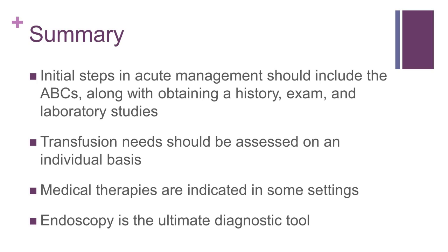In summary, the initial approach to a patient with an acute GI bleed includes managing the ABCs and obtaining pertinent history, exam, and laboratory studies to discern the etiology and evaluate the extent of the bleed. The decision to transfuse blood should be based on the individual patient's scenario. Medications such as IV proton pump inhibitors and IV octreotide are indicated in certain situations. Finally, endoscopy is the ultimate diagnostic tool in this setting and may provide therapeutic benefit as well.